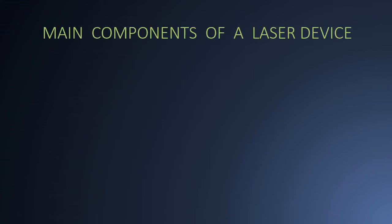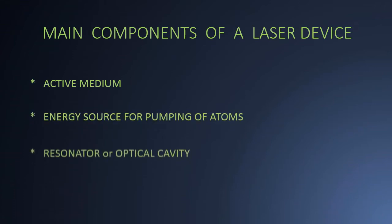A laser device consists of mainly three components: active medium, pumping source, and resonator. The pumping source supplies energy to the laser active medium for excitation of medium atoms. And this energy may be optical in nature, or electrical, or chemical, or thermal in different types of lasers.